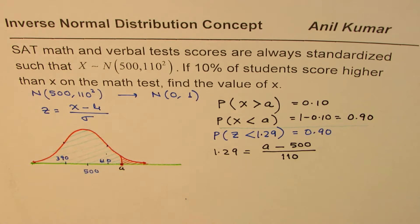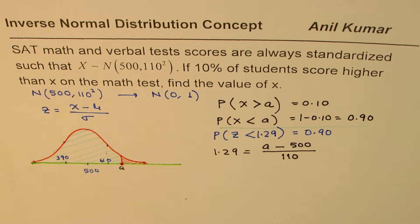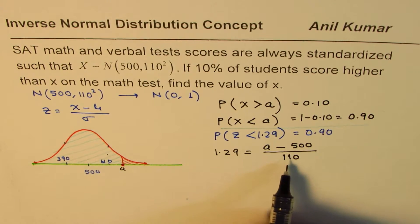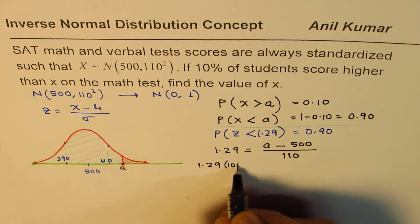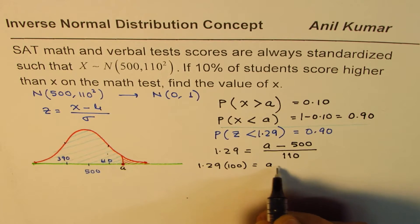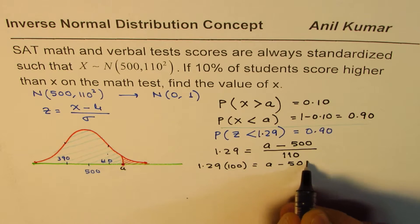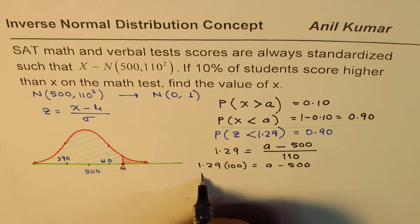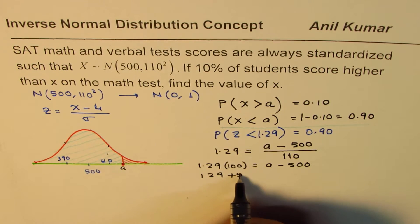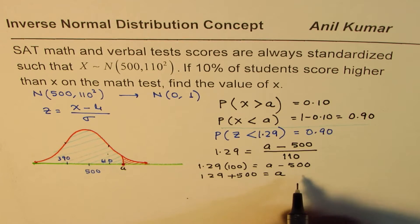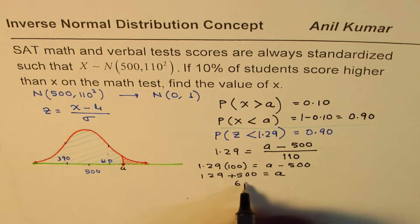Now we will just solve this equation. To solve for a, we will cross multiply. So we have 1.28 times 110 equals a - 500. Now we can isolate a. This is 140.8. I am bringing 500 here, add 500 to find a. So 640.8 is a.